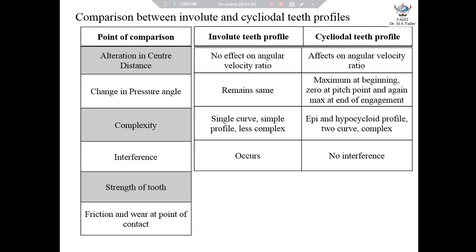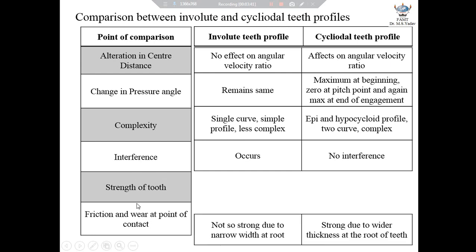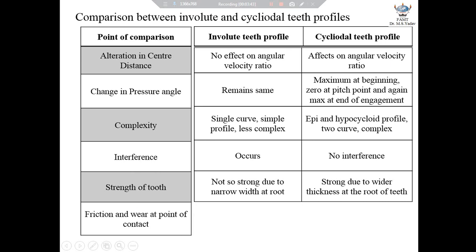The fifth point is the strength of the tooth. In an earlier video lecture wherein we discussed construction of involute and cycloidal teeth profiles, we understood that involute profiles are narrow at the root and hence weak. However, due to wide thickness at the root, cycloidal teeth are stronger compared to involute teeth profile.